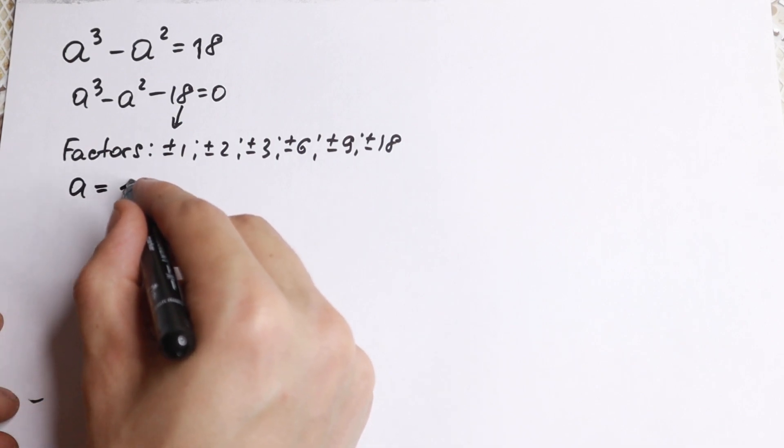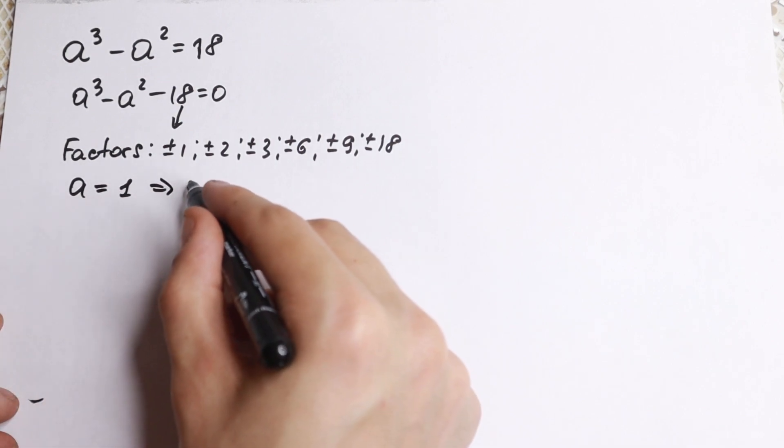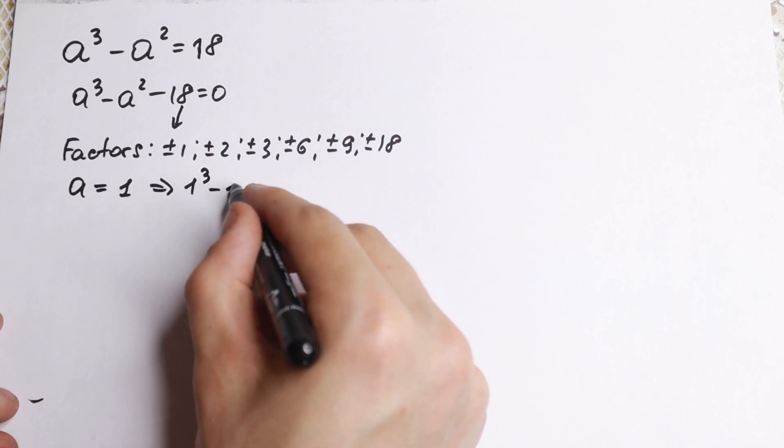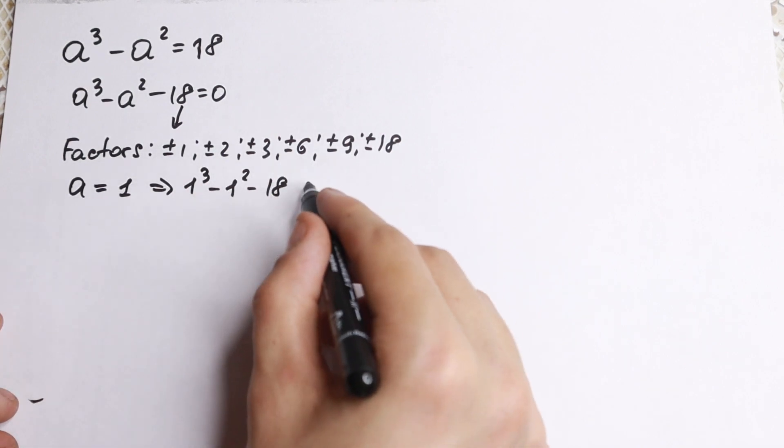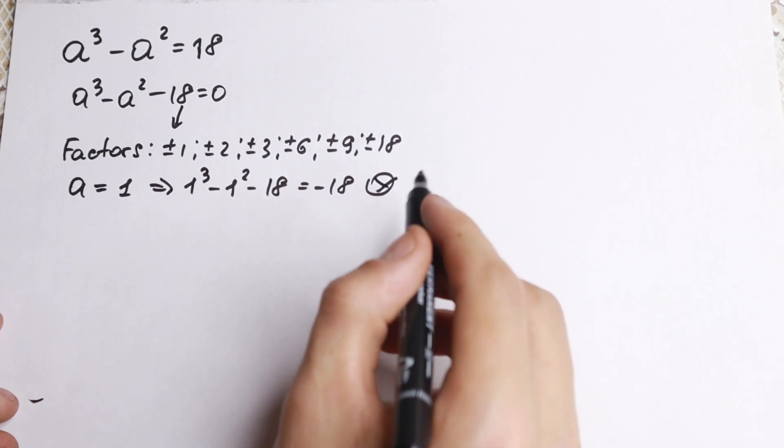If a = 1, what we will have? We will have 1³ - 1² - 18. If we substitute it, we will have -18. So this is not equal to 0.